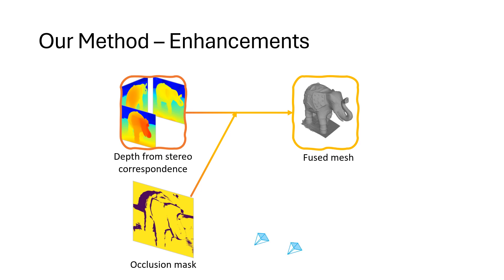Additionally, we set the horizontal baseline such that the region of interest of the scene will be 4 to 20 baselines away from the cameras. We mask out areas where the depth is not in this range.